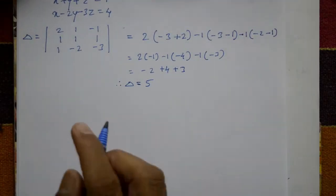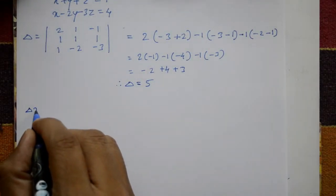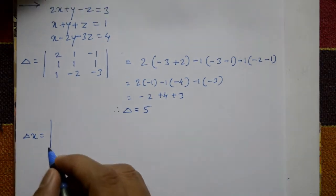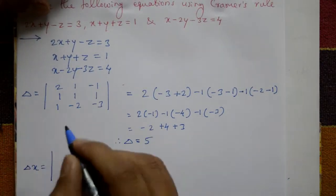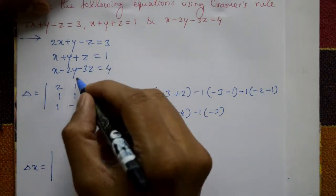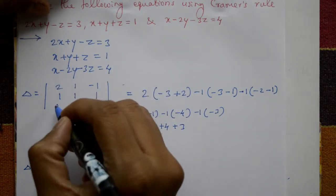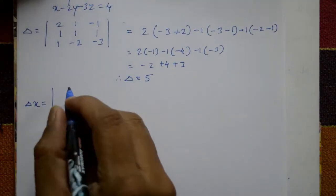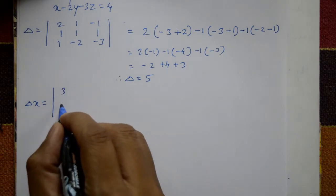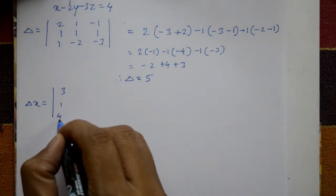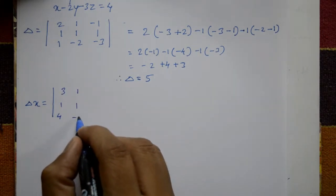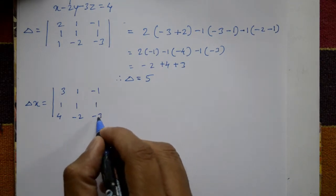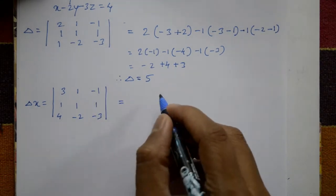Next, find Delta x. Delta x is again a determinant, but change the first column — substitute 3, 1, 4 (the constants) in the first column. The second and third columns remain as they are.